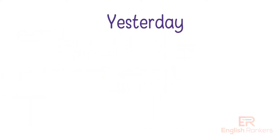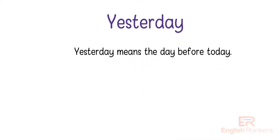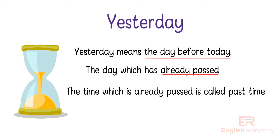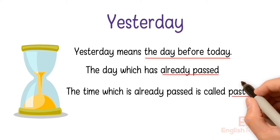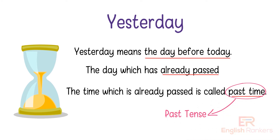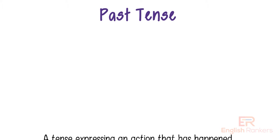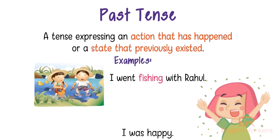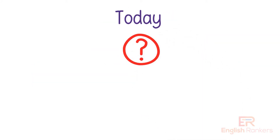Hello students. What's the meaning of yesterday? Yesterday means the day before today — the day which has already passed. The time which is already passed is called past time, and past time is also called past tense, as tense means time. We can define past tense like this: a tense expressing an action that has happened or a state that previously existed. For example: I went fishing with Rahul. I was happy.